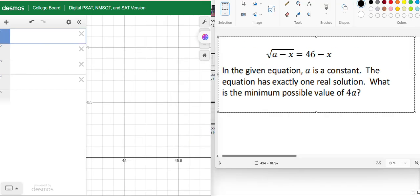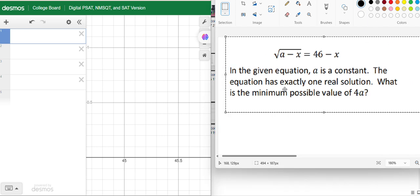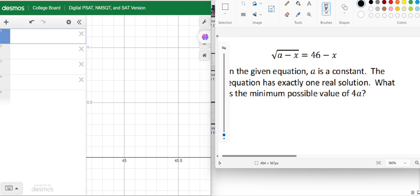So this is the last question for this video. Hopefully you guys are enjoying it and learning some important techniques to use Desmos. In this question we have two equations, and the equation has only one real solution. So what is the minimum possible value of 4a? To solve this type of question, first we have to find minimum possible value of a and we have to multiply it by 4. Let's get started.